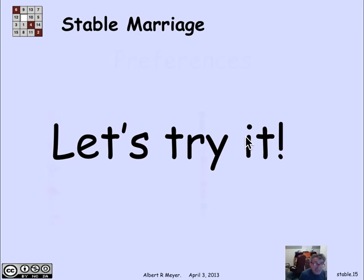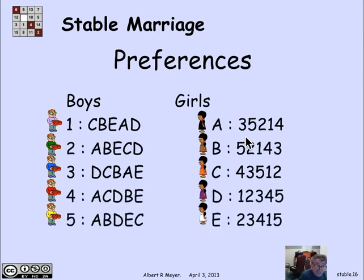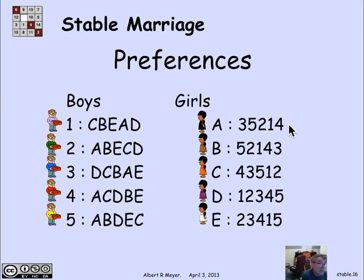Here is a display of those preferences again — you can stop the video and try to find a stable set of marriages yourself. We used to do this in class in real time: five boys and five girls, each with a chart of preferences, not supposed to reveal them. The girls would interview the boys and the boys the girls simultaneously, trying to agree to marry. Most of the time they actually wound up with a stable set, but not always.